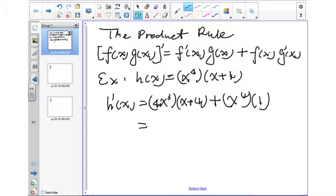And finally, you can simplify this equation. It will be 4x to the fourth plus 16x cubed plus x to the fourth.